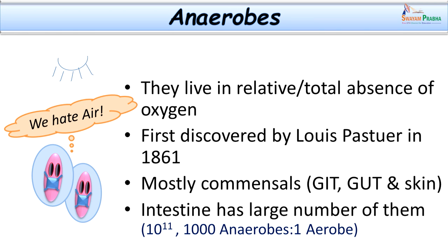Let us now consider what are the characters of anaerobes — what are they? Anaerobes are bacteria which can survive and exist without the presence of oxygen. In fact, some of them are going to be killed when they are exposed to as little as 0.03 percent oxygen — that little oxygen can usually kill them.